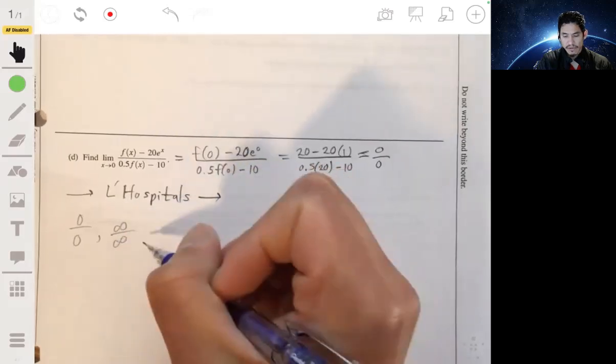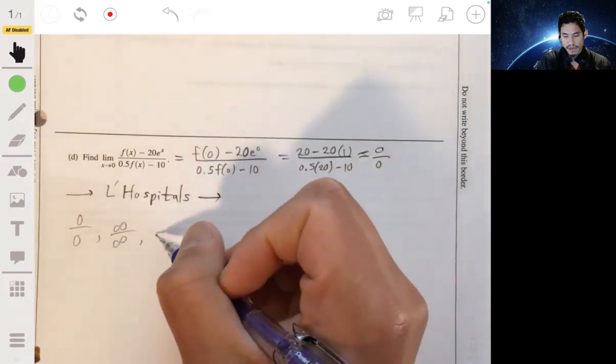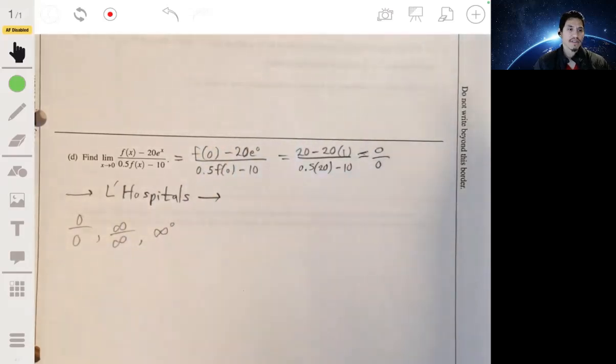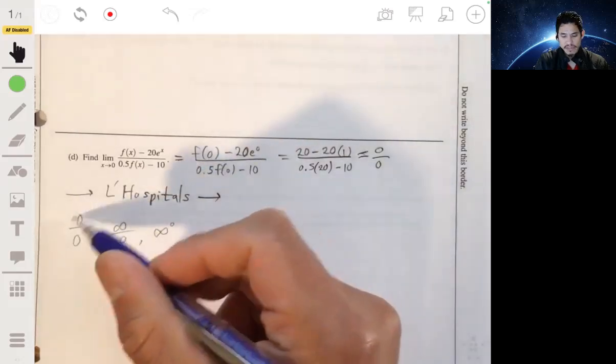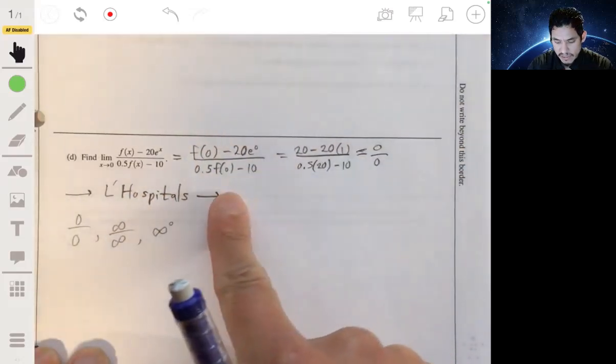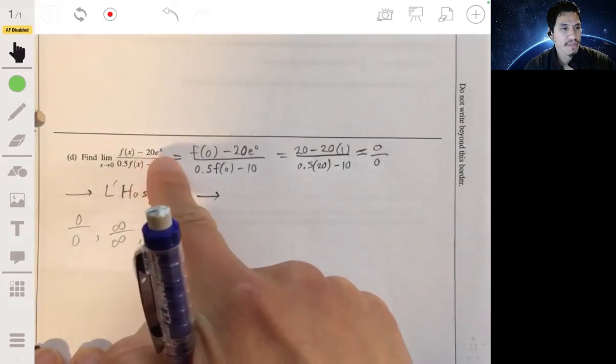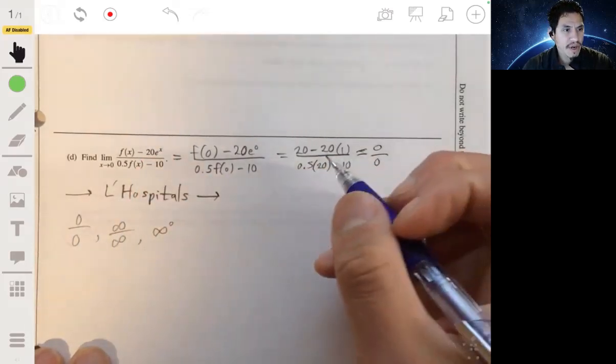And what that says is that when you get an indeterminate form of 0 over 0 or like infinity to infinity, something like that, you can use those. These are the most common. You can also get like infinity to 0 or something and infinity to infinity. But we have this indeterminate form that just means that we just have to take the derivative of the top expression and over the derivative of the bottom expression and reevaluate.